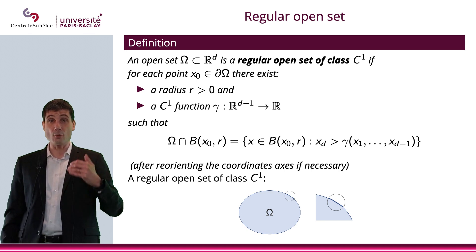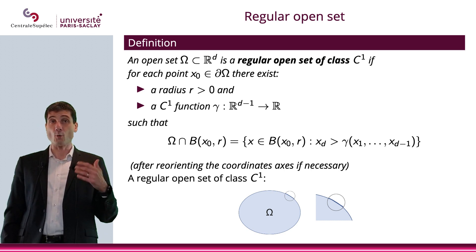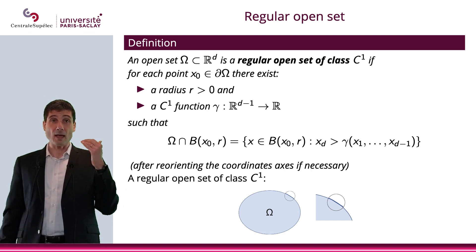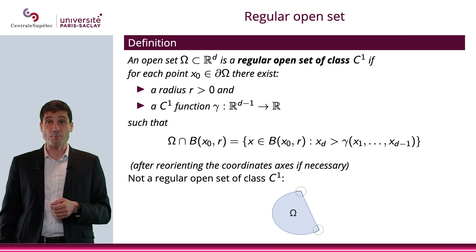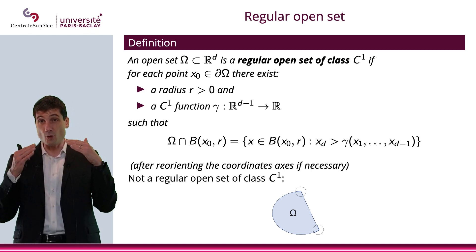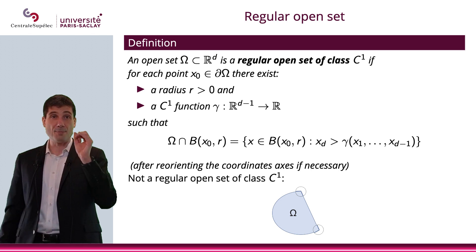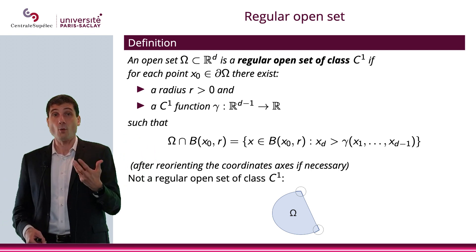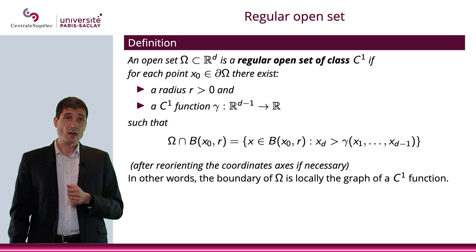We say 'of class C^1' because we require gamma to be of class C^1. In the same way you could define a regular open set of class C^25 by requesting gamma to be C^25, or even C^∞. Let me show you a set which is NOT a regular open set of class C^1: a set with vertices, because at those vertices you can't have a C^1 function representing the boundary — it would be continuous but not C^1. No matter what you do, if you center your disk at one of those vertices, there is absolutely no way to express it with a C^1 function.